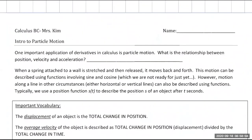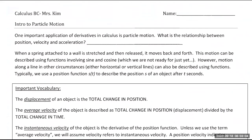Down below we'll summarize some of those things. On the top it asks: what's the relationship between position, velocity, and acceleration? Velocity is the derivative of the position function — S prime of T. Anyone know how acceleration is related to either velocity or position?